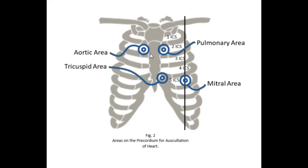The aortic valve is the only one on the right side. Every time you see your doctor put their stethoscope on your right, they are trying to auscultate the aortic valve. It is located in the second right intercostal space, right of the sternal border.